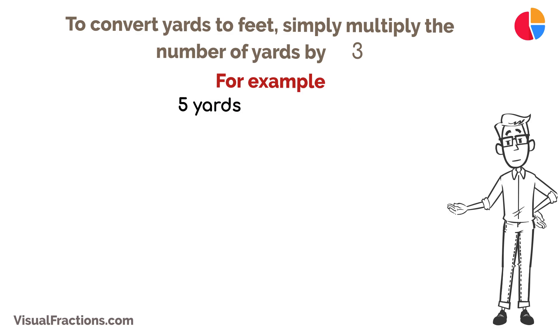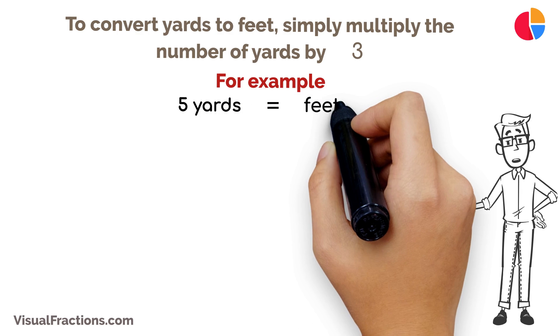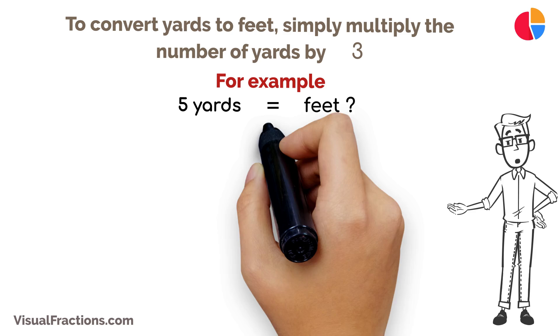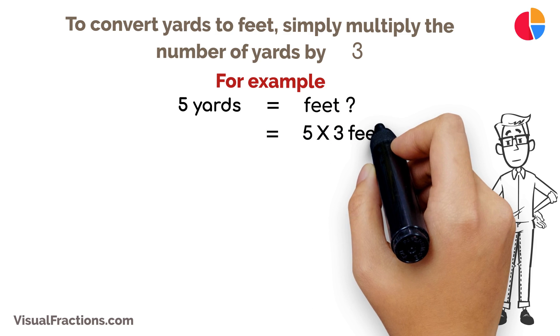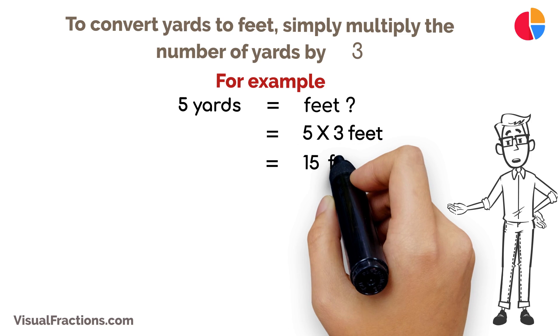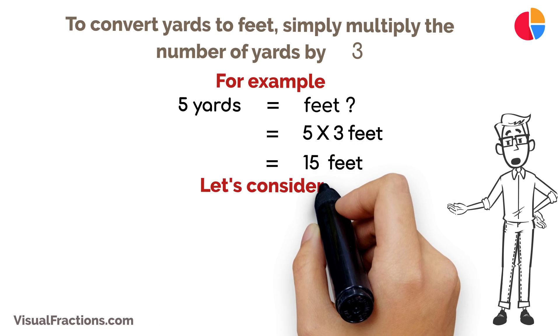For example, if you have a measurement of five yards and want to know how many feet that is, you multiply five yards by three. This gives you a total of 15 feet. Let's consider another scenario.